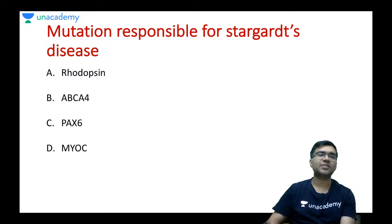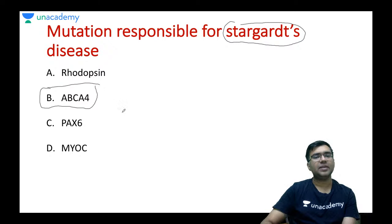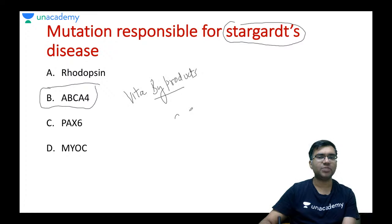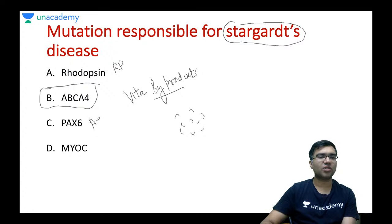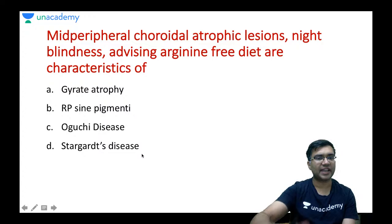MCQ 4: The mutation responsible for Stargardt's disease — rhodopsin, ABCA4, PAX6, or MYOC? The answer is ABCA4, involved in clearing byproducts of vitamin A metabolism. Rhodopsin gene is responsible for RP; PAX6 is for anterior segment morphogenesis; MYOC gene is associated with steroid-induced raised intraocular pressure.